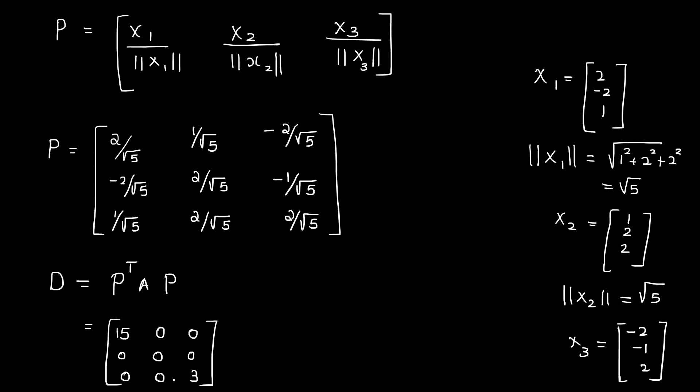So the final answer: the diagonal matrix D has diagonal elements 15, 0, and 3, with all other values equal to zero. Apply this value to complete the answer.